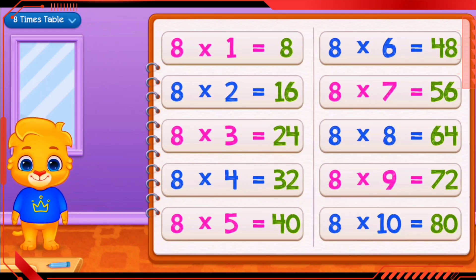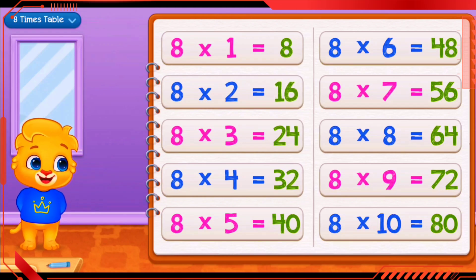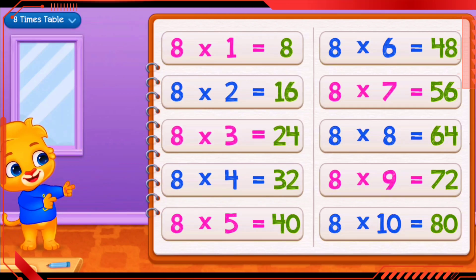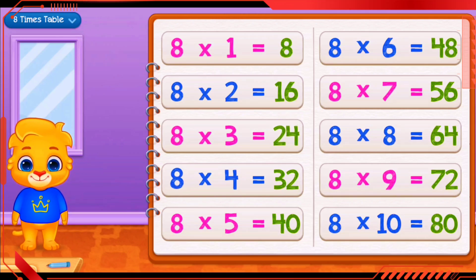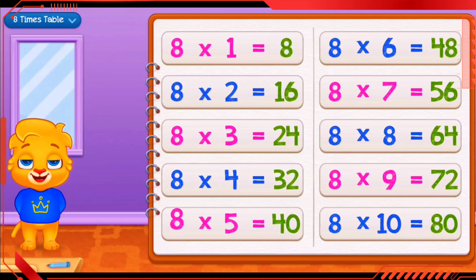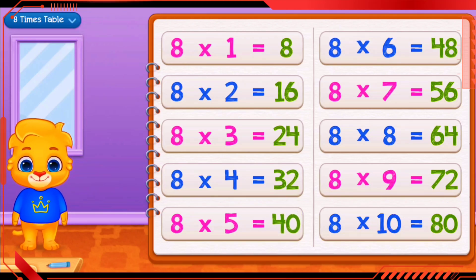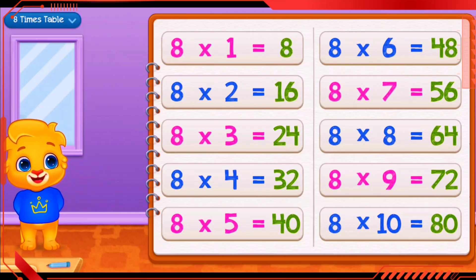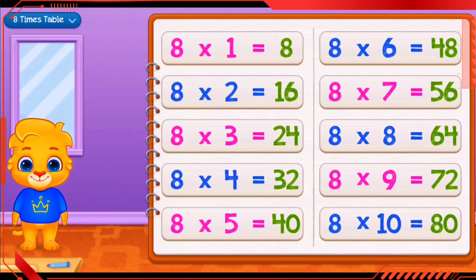8 times 1 equals 8. 8 times 2 equals 16. 8 times 3 equals 24. 8 times 4 equals 32. 8 times 5 equals 40. 8 times 6 equals 48. 8 times 7 equals 56. 8 times 8 equals 64.